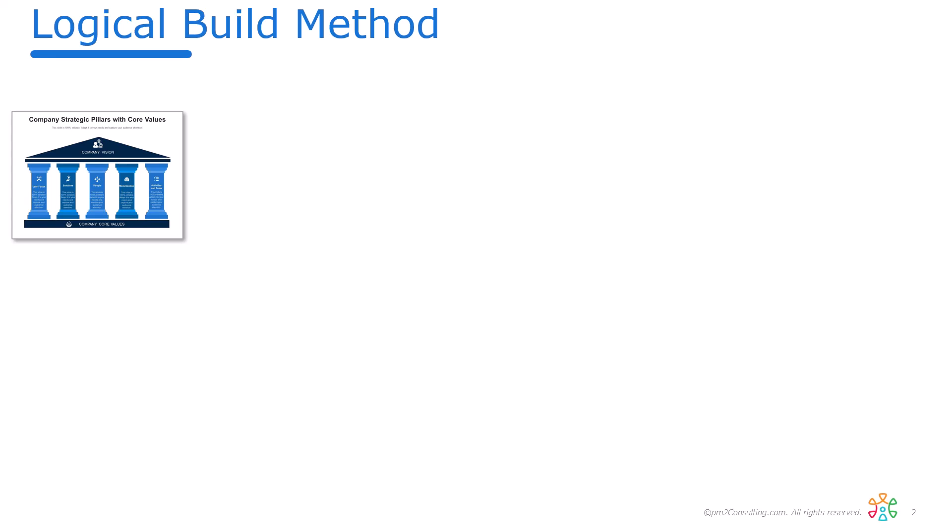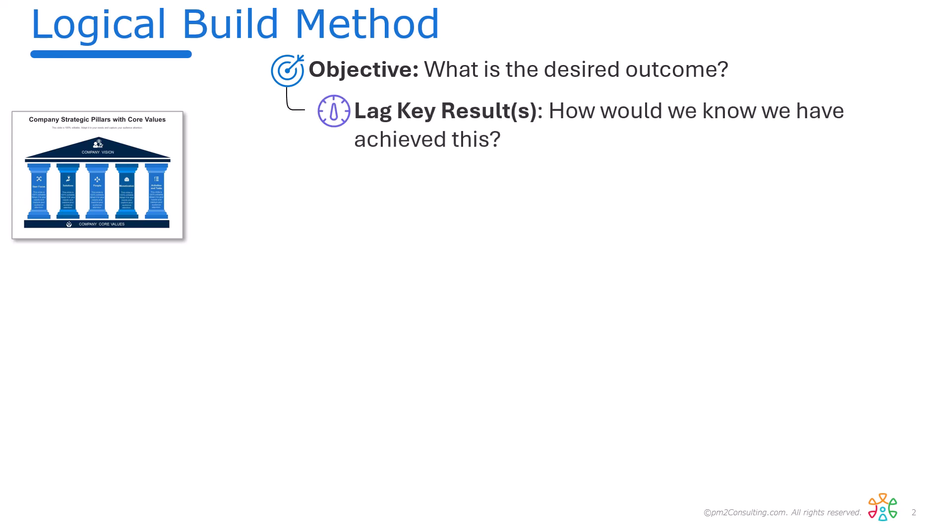Think of taking your strategy statement, which probably has a bunch of pillars in this example. Each one of those pillars is an objective, and we should be describing what is the desired outcome. Once we've figured that out, we need to say: what is the lagging measure? What would we see more of or less of as we achieve that desired outcome?